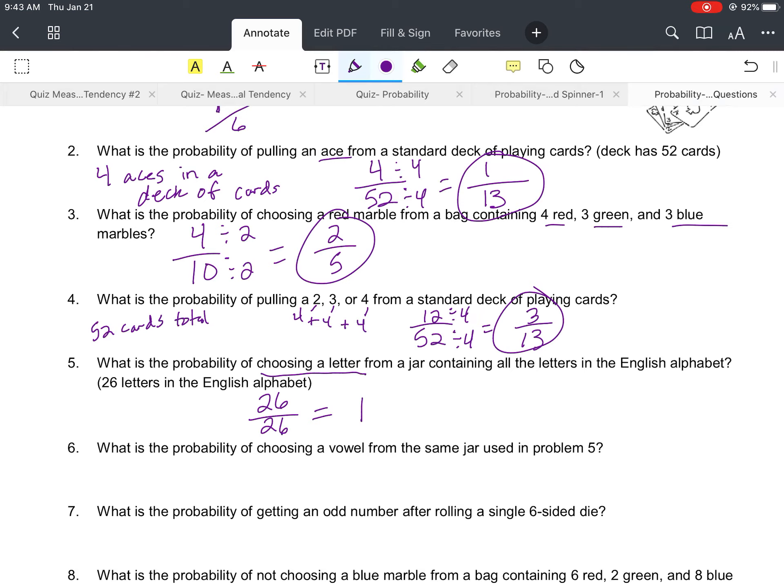So all 26 letters are in that jar, so 26 out of 26 times, which reduces down to one. And from what we learned previous, when we have a probability of one, that means it's certain. It's certainly going to happen. It's a 100% probability that you're gonna get that.